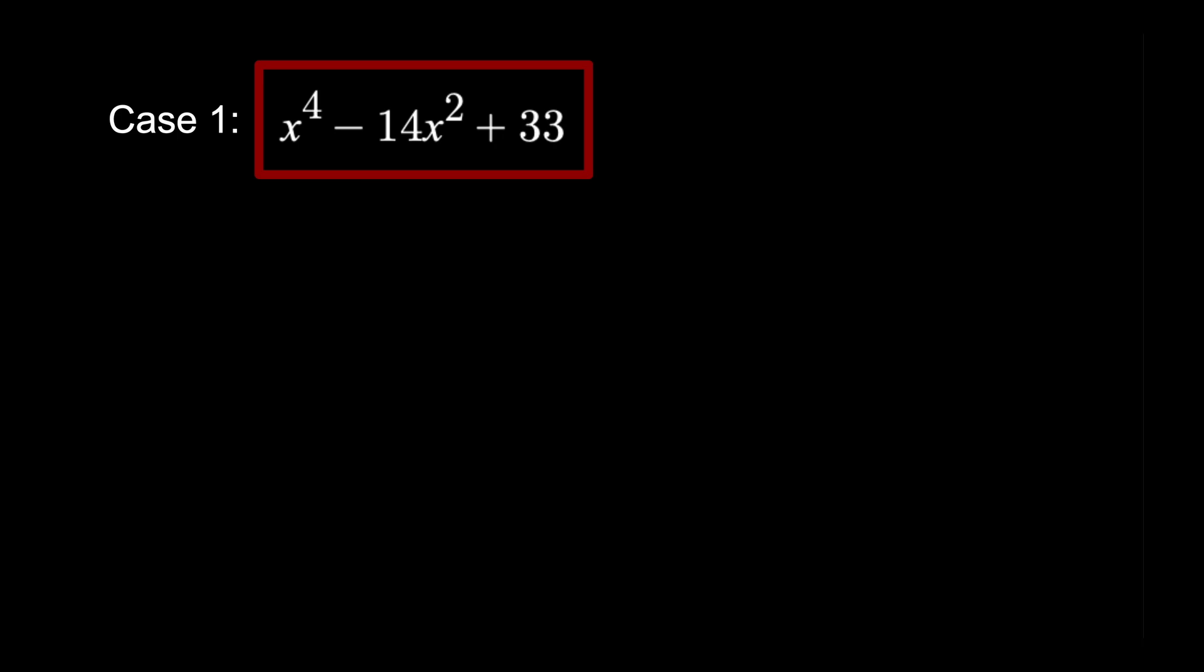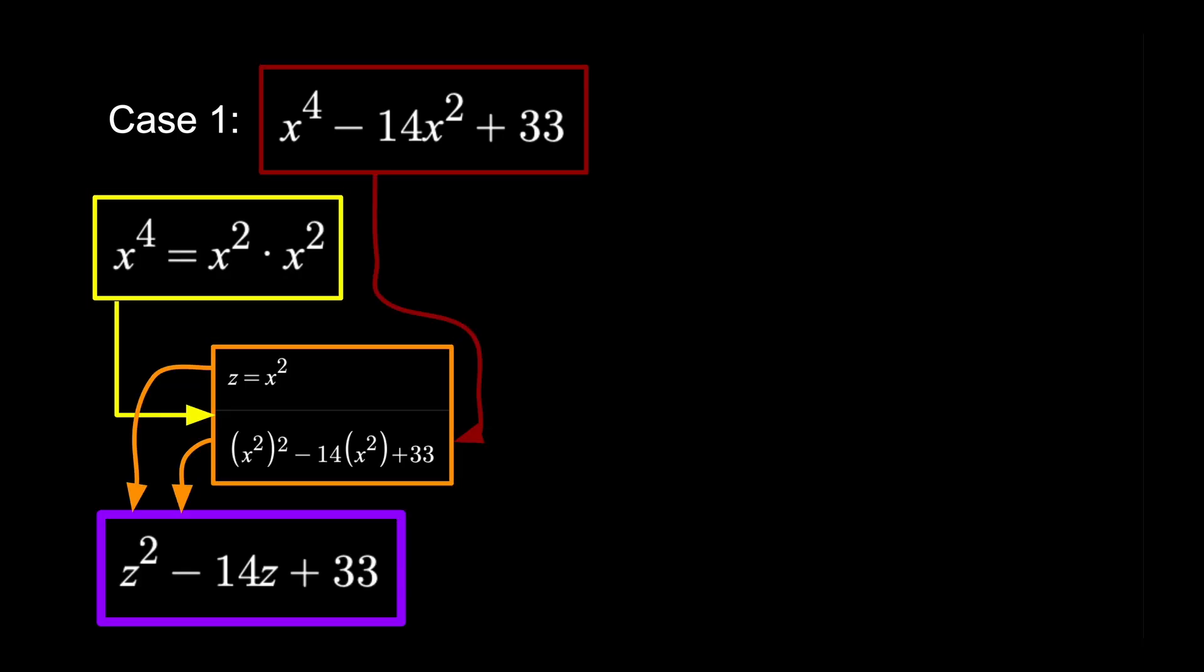We'll start with the easiest one. x to the fourth is equal to x squared squared, so we can substitute that for z. Let's use factoring for this one. To do this, find p, q, r, and s, which satisfy these identities.